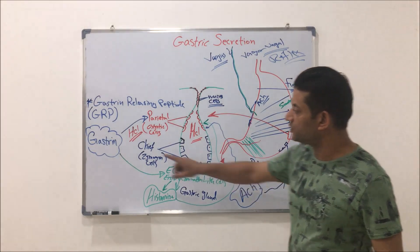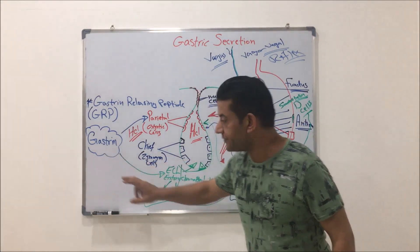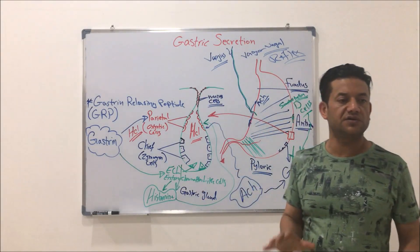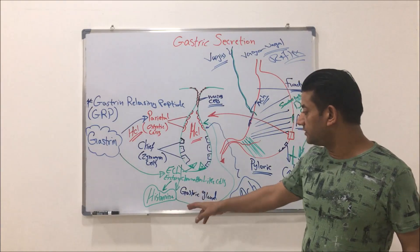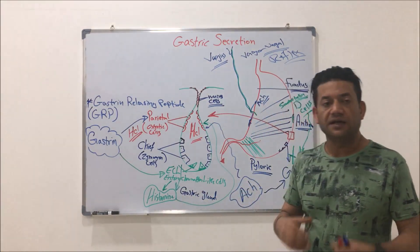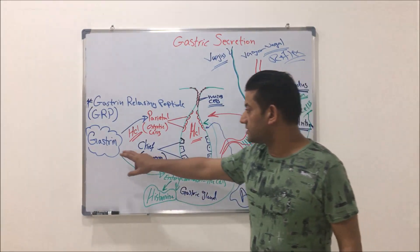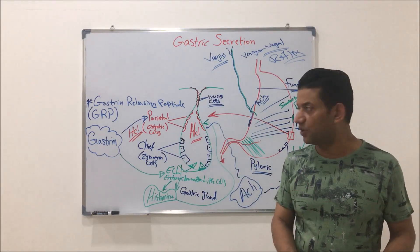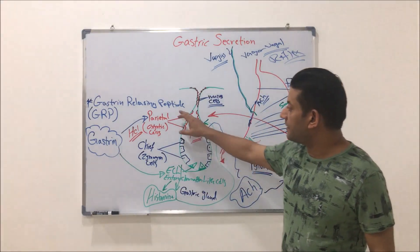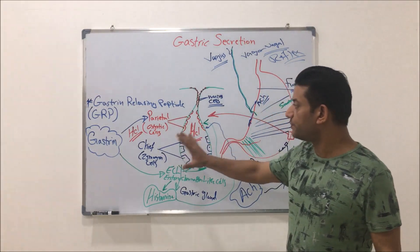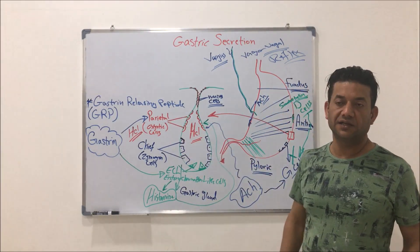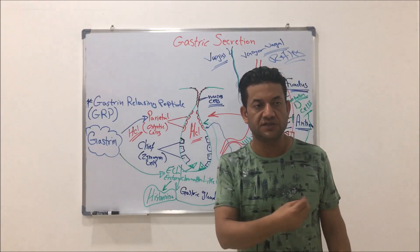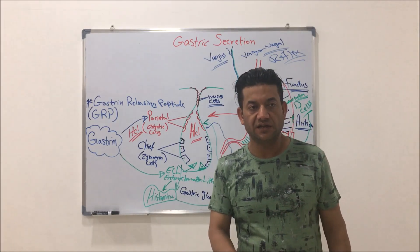Somatostatin will act on G cells and also on ECL, causing inhibition of ECL and stoppage of histamine release. So when gastrin and histamine secretion is stopped or inhibited, the parietal cells will stop releasing HCl. This was the end of the third phase, which is the intestinal phase.